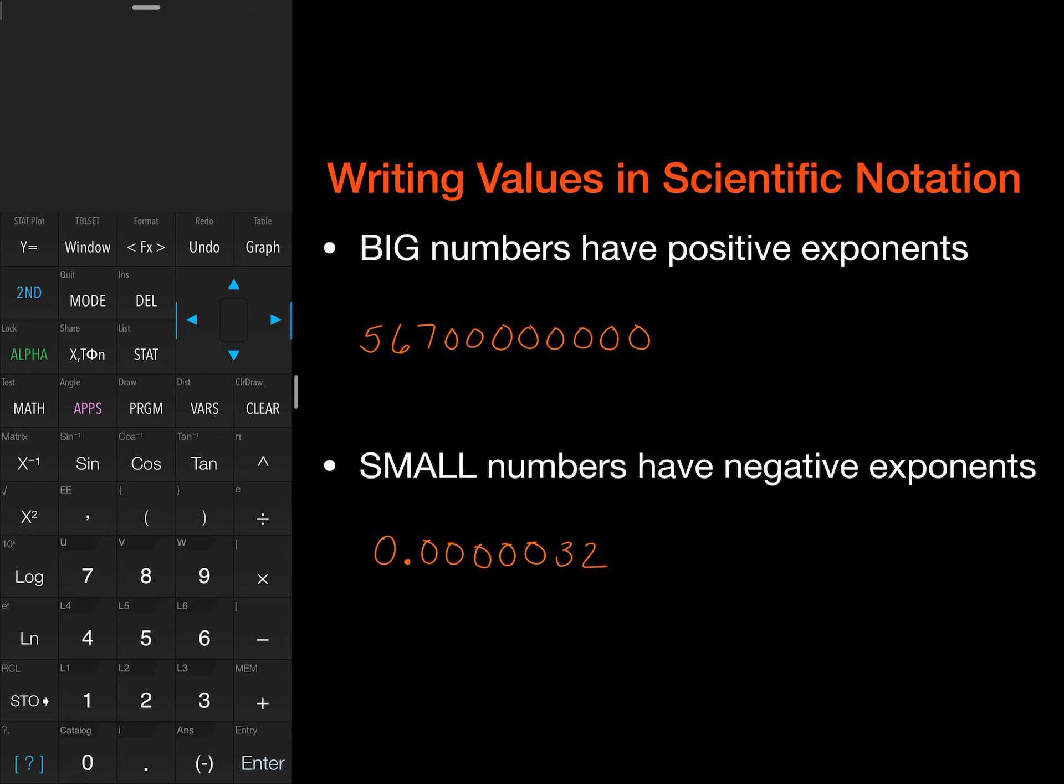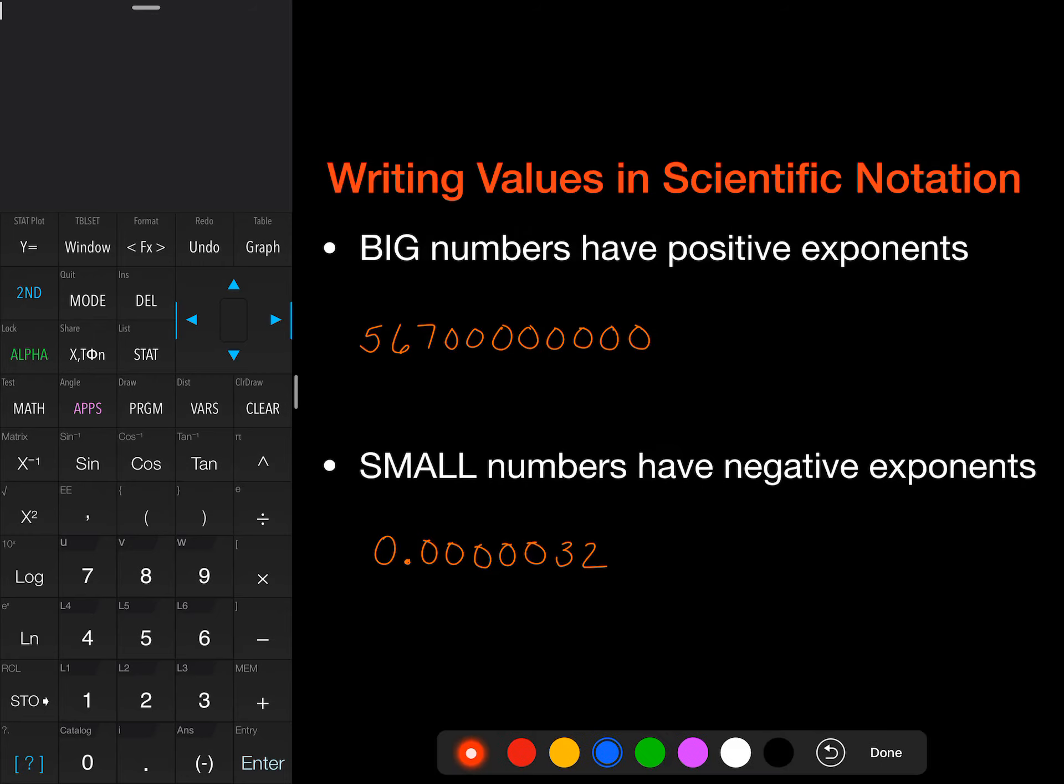We're going to start with a really big number, and really big numbers have positive exponents. So if I take this really big number and I assume that my decimal place is at the very end of my number, I'm just going to jump that decimal place back, and I'm going to count the number of times I jump back. So I'm going to go 1, 2, 3, 4, 5, 6, 7, 8, 9, 10.